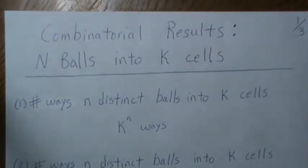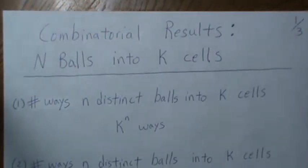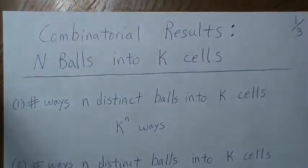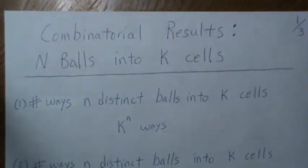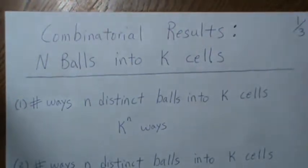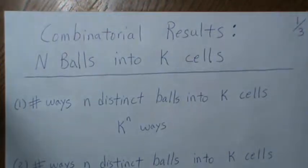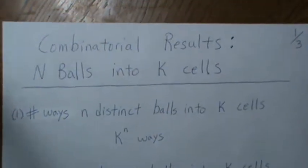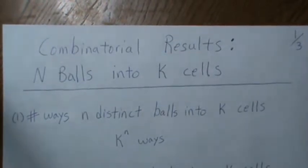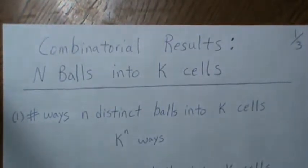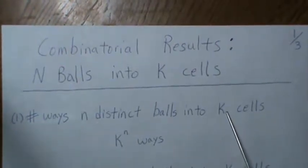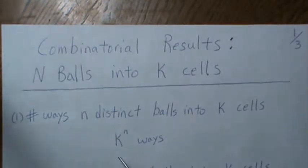Hello, this is the second video in combinatorial results. In this video we're going to look at putting n balls into K cells. There are four different ways to think about this. We'll give the different ways, give the formula for the total number of ways, and then give a heuristic argument on the proof of those numbers. Here we have n distinct balls, maybe numbered 1 to n, and we have K cells.